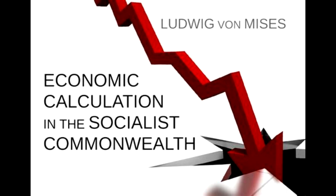Where one cannot express hours of labor, iron, coal, all kinds of building material, machines, and other things necessary for the construction and upkeep of the railroad in a common unit, it is not possible to make calculations at all. The drawing up of bills on an economic basis is only possible where all the goods concerned can be referred back to money. Admittedly, monetary calculation has its inconveniences and serious defects, but we have certainly nothing better to put in its place, and for the practical purposes of life, monetary calculation as it exists under a sound monetary system always suffices. Were we to dispense with it, any economic system of calculation would become absolutely impossible. The socialist society would know how to look after itself. It would issue an edict and decide for or against the projected building. Yet this decision would depend at best upon vague estimates. It would never be based upon the foundation of an exact calculation of value.